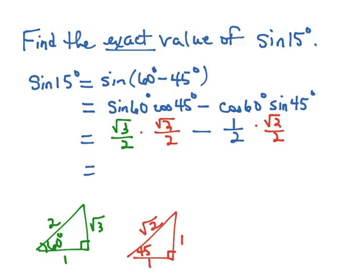So simplifying down what we have, the square root of 3 times the square root of 2 would be the square root of 6, 2 times 2 is 4, minus 1 times the square root of 2 is the square root of 2, 2 times 2 is 4. So we end up with the square root of 6 minus the square root of 2 over 4. And that's the exact value of the sine of 15 degrees.